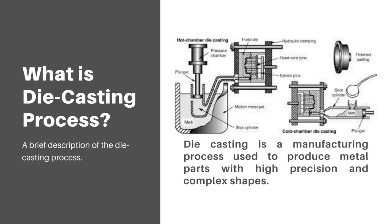What is the die casting process? The die casting process is a manufacturing process used to produce metal parts with high precision and complex shapes. It involves injecting molten metal, usually non-ferrous alloys such as aluminium and zinc, under high pressure into a reusable steel mold called a die.